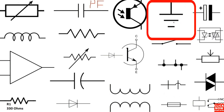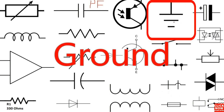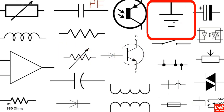Here we have the ground. This is basically the analog ground. There are many types of ground: analog ground, digital ground, and chassis ground. This symbol is for analog ground, this one is for digital ground, and this symbol is for chassis ground.